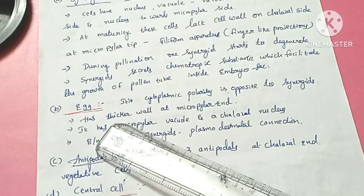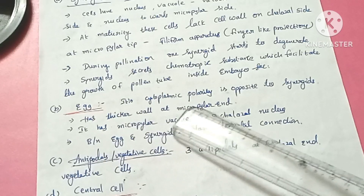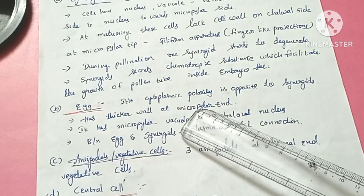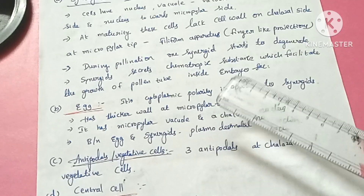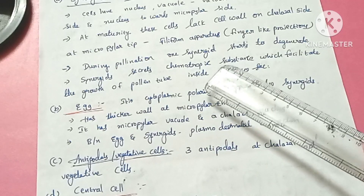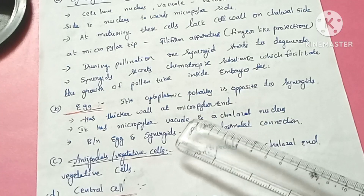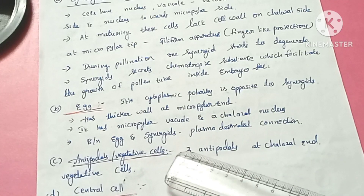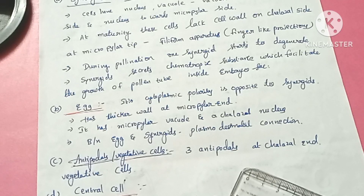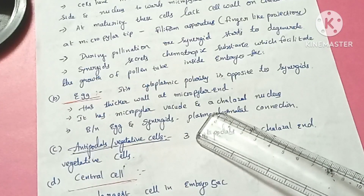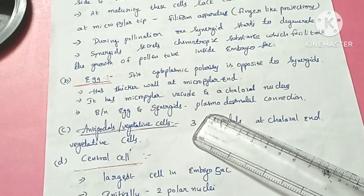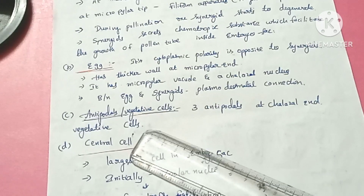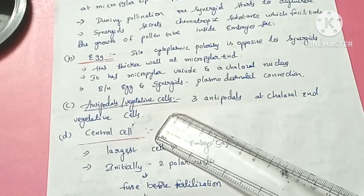The egg cell has thick walls at the micropylar end. The cells of the egg apparatus are connected to each other through plasmodesmata.